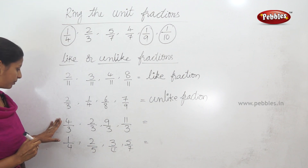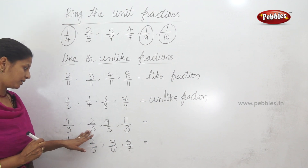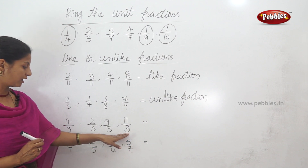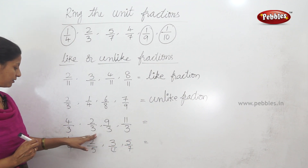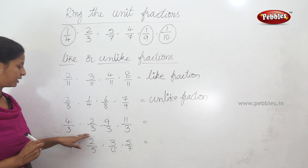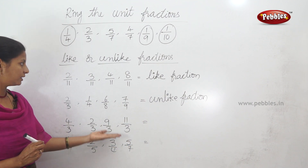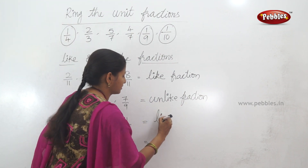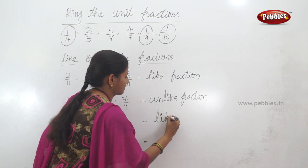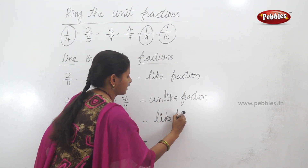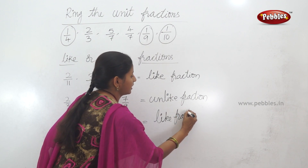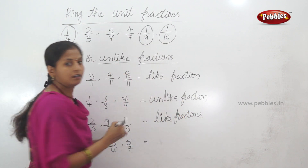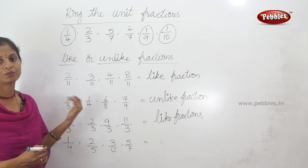Next: 4 by 3, 2 by 3, 9 by 3, 11 by 3. The denominator is 3 in all cases — same number. This fraction is a like fraction.